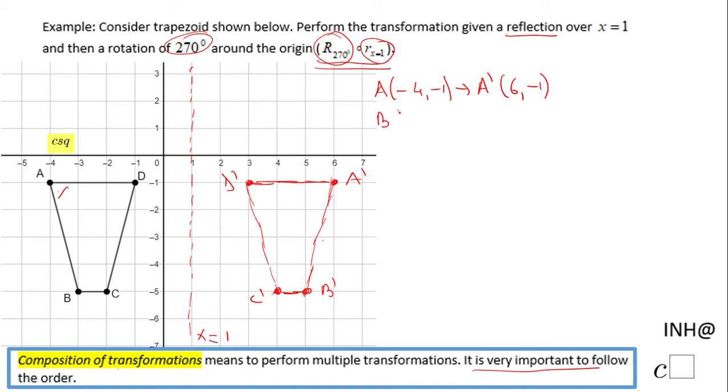B, which has the coordinates negative 3, negative 5, under this reflection becomes B prime, which is 5 and negative 5.